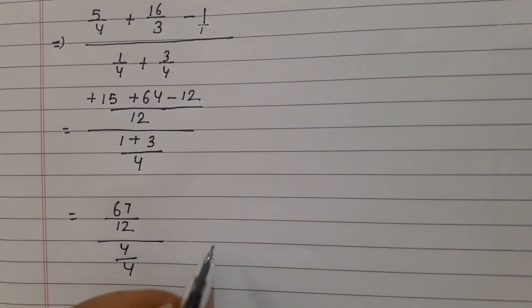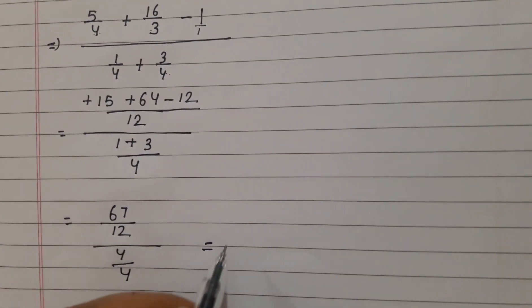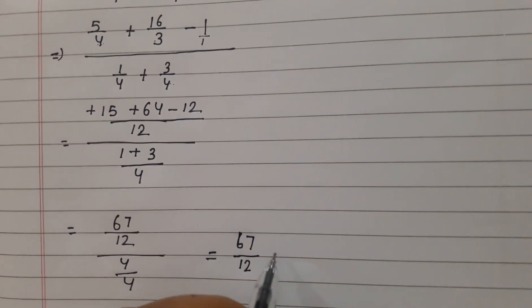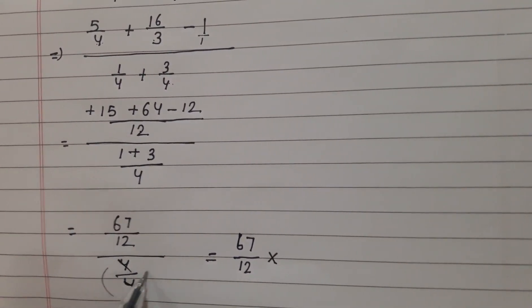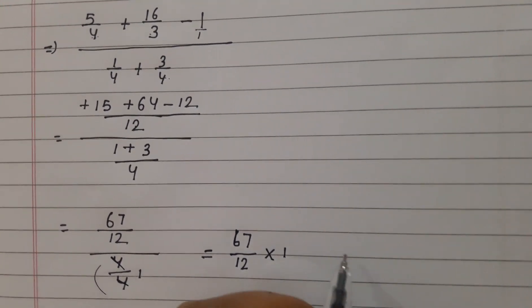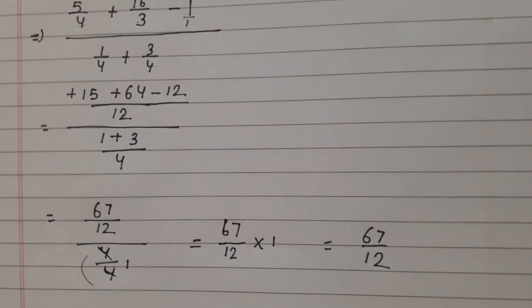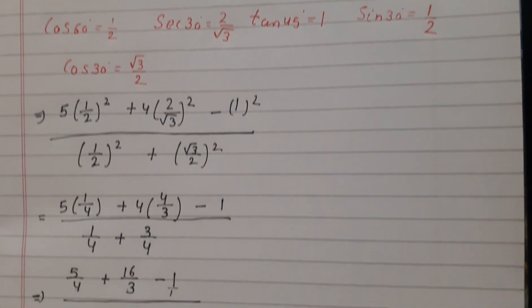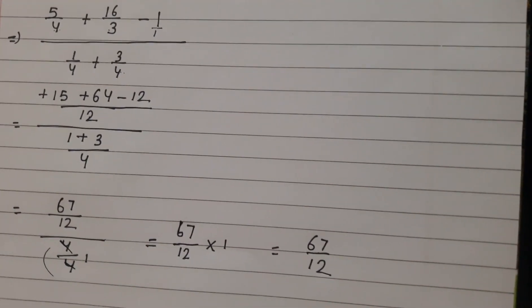Now we have to complete the division. In fractions we will change it, multiply 67 by 12 into this fraction 4 by 4, which is 1. So the answer is 67 by 12. I hope you will understand this question.